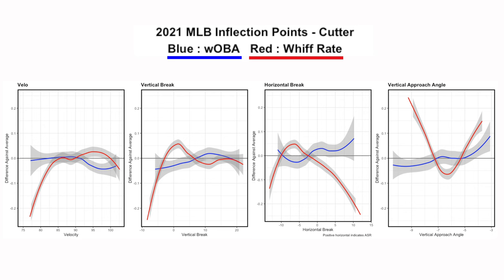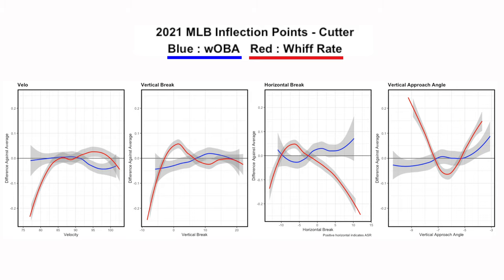Going through the inflection points here, whiff rate is this red line, and we want to see that above average. The blue line is WOBA, and we'd like to see that get below average. We're going to move through each category here to see how cutters profile best.